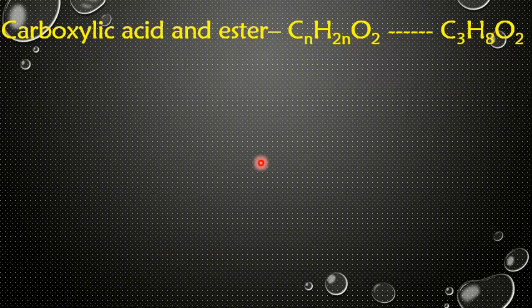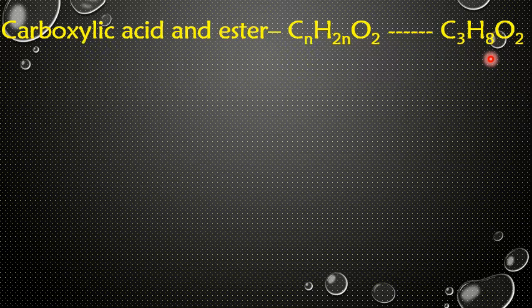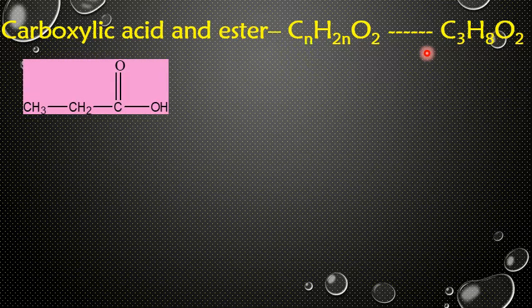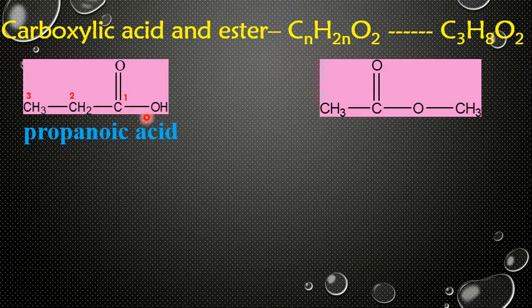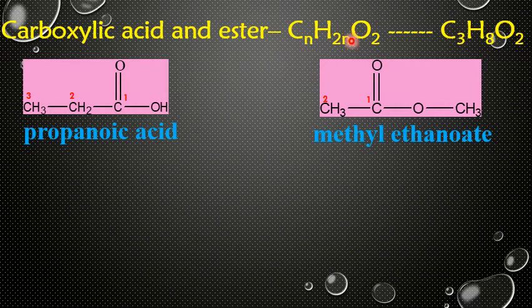Now let's take the carboxylic acid and ester category. The common molecular formula for both carboxylic acid and ester is CnH(2n)O2. If a molecule has three carbons, its molecular formula is C3H6O2. We can draw a carboxylic acid and an ester with this formula. In propanoic acid, the COOH group is the functional group, while in methyl ethanoate it is an ester group.